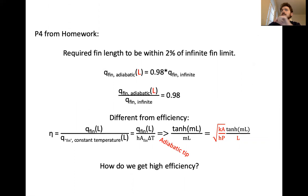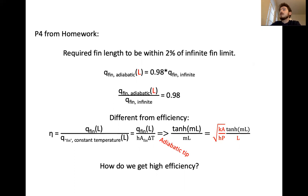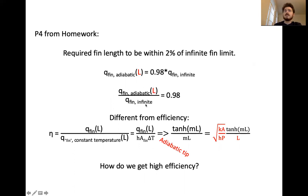That leads to the concept of efficiency. There isn't a direct name for the ratio of your adiabatic heat rate to your theoretical infinite FIN heat rate, but generally speaking, as you increase L you get closer to the infinite FIN limit. Efficiency works differently — efficiency compares your heat rate from your fin (modeled as adiabatic, convective, or measured experimentally) relative to what the heat rate would be if the entire fin were at constant temperature. That sets an upper bound for the theoretical maximum heat rate under idealized conditions.